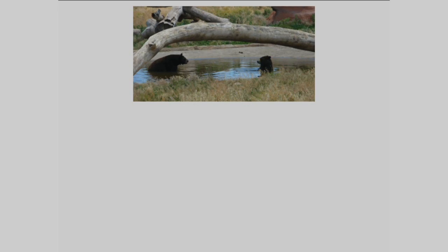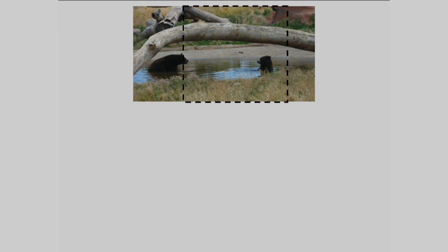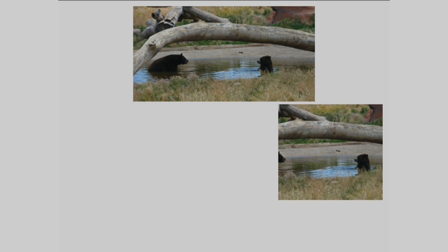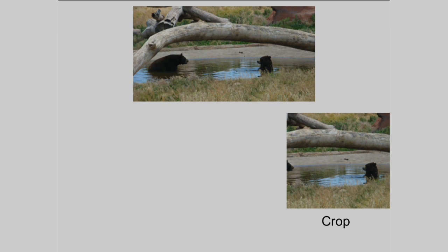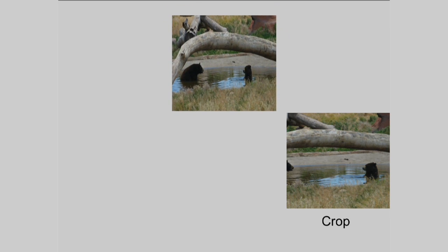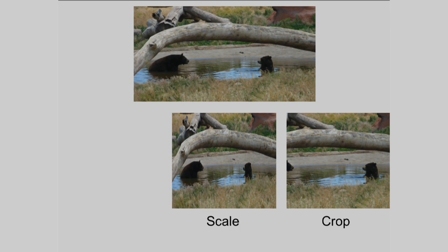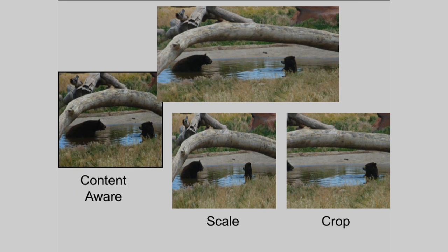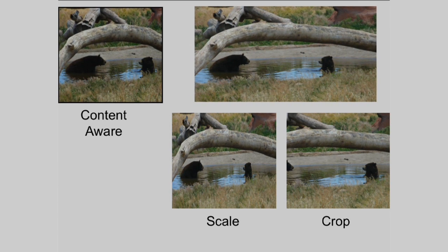But cropping doesn't always work. Here's an image, and if I try to crop it, well, something has to give — I can't preserve all the content. You might think, why not just scale the image? But if we use scaling, you can see that there are artifacts created. What we wanted to find is a way to change the size of the image while still preserving its content. That's why we call this content-aware resizing.